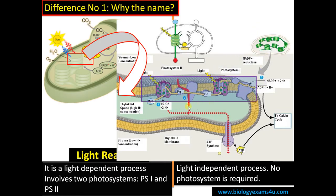Photosystems are simply a collection of pigment molecules that are capable of receiving light energy, and from there electrons are released. During the movement of electrons, the energy released is used to pump protons into the lumen. While these protons move through ATP synthase, that proton-driven force drives the synthesis of ATP from ADP and Pi.